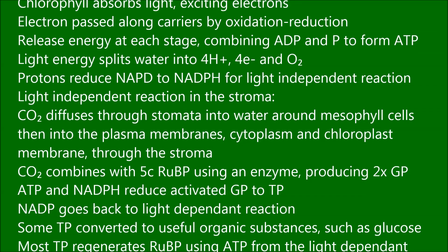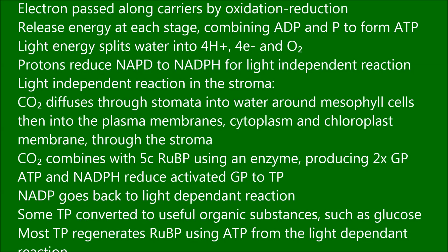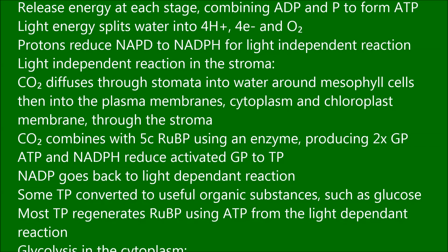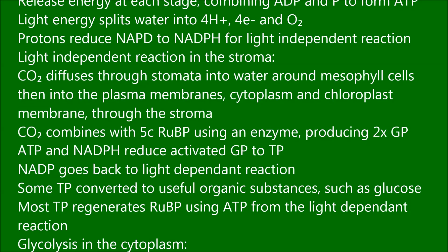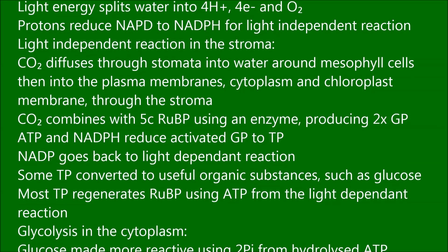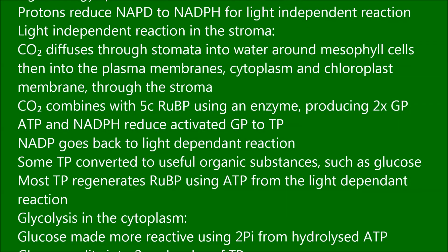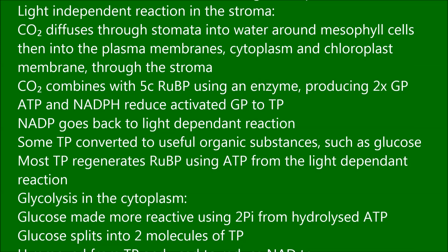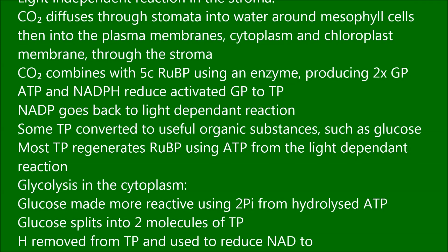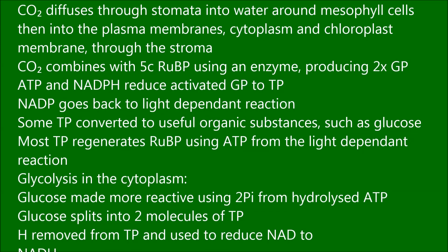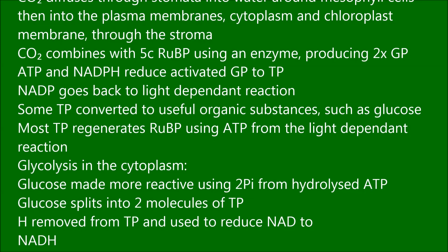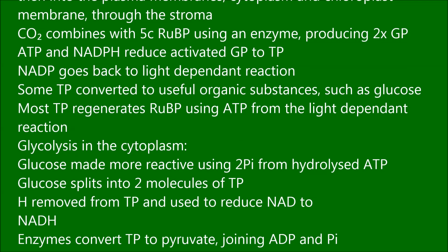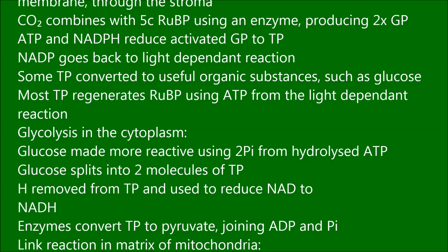Carbon dioxide combines with 5-carbon ribulose bisphosphate using an enzyme, producing 2 molecules of GP. ATP and NADPH reduce activated GP to TP; NADP goes back to the light dependent reaction. Some TP is converted to useful organic substances such as glucose. Most TP regenerates RuBP using ATP from the light dependent reaction.